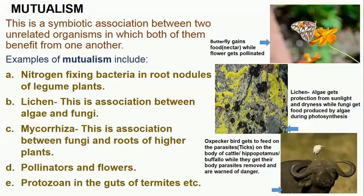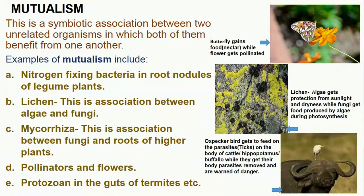The legume plants protect the bacteria inside the root nodules. Next we have lichens — these are a symbiosis between algae and fungi. The algae are the ones that are green in color while the fungi are the ones that are black in color. The algae get protection from sunlight and dryness while the fungi get food produced by the algae during photosynthesis. Another example is mycorrhiza — this is an association between fungi and the roots of higher plants.